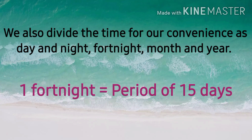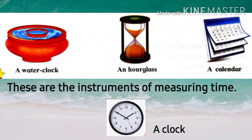Now let's revise the instruments of measuring time. In this picture you can see a water clock, an hourglass, a calendar and a clock. Nowadays we are not using a water clock and an hourglass. In the 14th century, the hourglass came into use in Europe and also it was used in India.